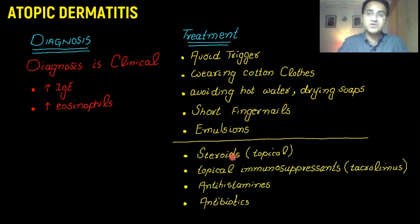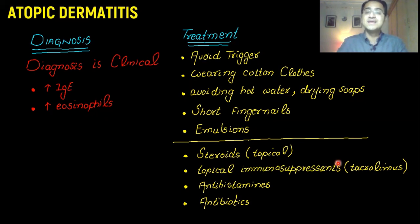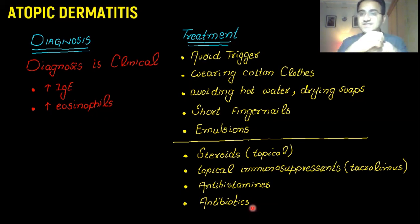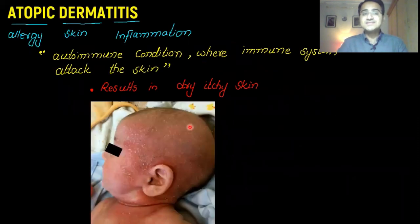If these interventions are not enough to control symptoms, the patient needs to be started on topical steroids, which are immunosuppressants that suppress the immune system and reduce the allergic reaction. Topical immunosuppressants like tacrolimus can also be used. Antihistamines are used as well, and antibiotics are used to prevent infection when scratching exposes the skin to bacterial invasion.